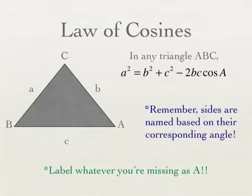What I do is always name what I'm looking for A. If I'm looking for a side length, I go to the side I'm trying to find and name it lowercase a — that automatically makes the angle across from it angle A, and B and C are just the other two side lengths. If I'm looking for an angle, I take that angle, name it angle A, and the side across becomes side A. That A is always the thing you're trying to find.